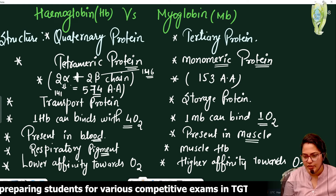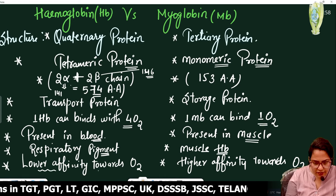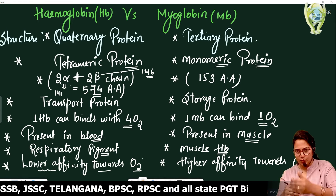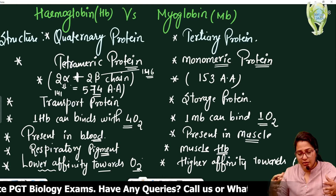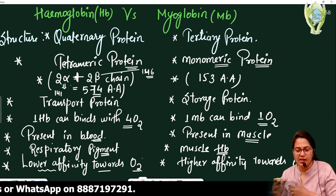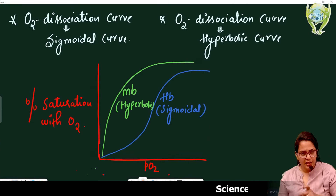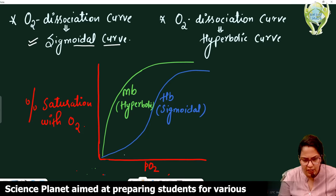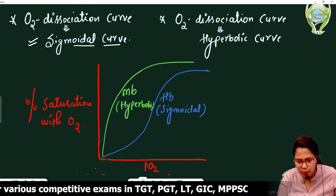Myoglobin is also known as muscle hemoglobin. Hemoglobin की oxygen के साथ lower affinity है। अगर दोनों में oxygen dissociation और association की बात करें, तो hemoglobin की oxygen के साथ lower affinity है as compared to myoglobin, क्योंकि myoglobin की oxygen के साथ higher affinity है। Oxygen association-dissociation curve hemoglobin का sigmoidal होता है।